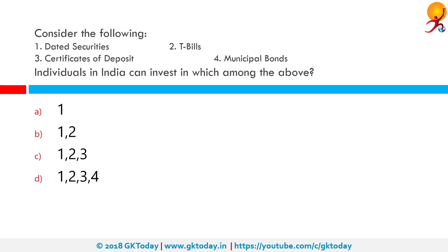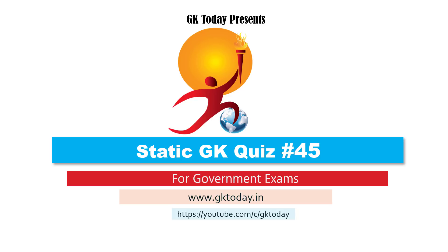Consider the following: (1) dated securities, (2) T-bills, (3) certificates of deposits, (4) municipal bonds. Individuals in India can invest in which among the following? As a citizen of India, we can invest in either of those, so the correct answer is all four.